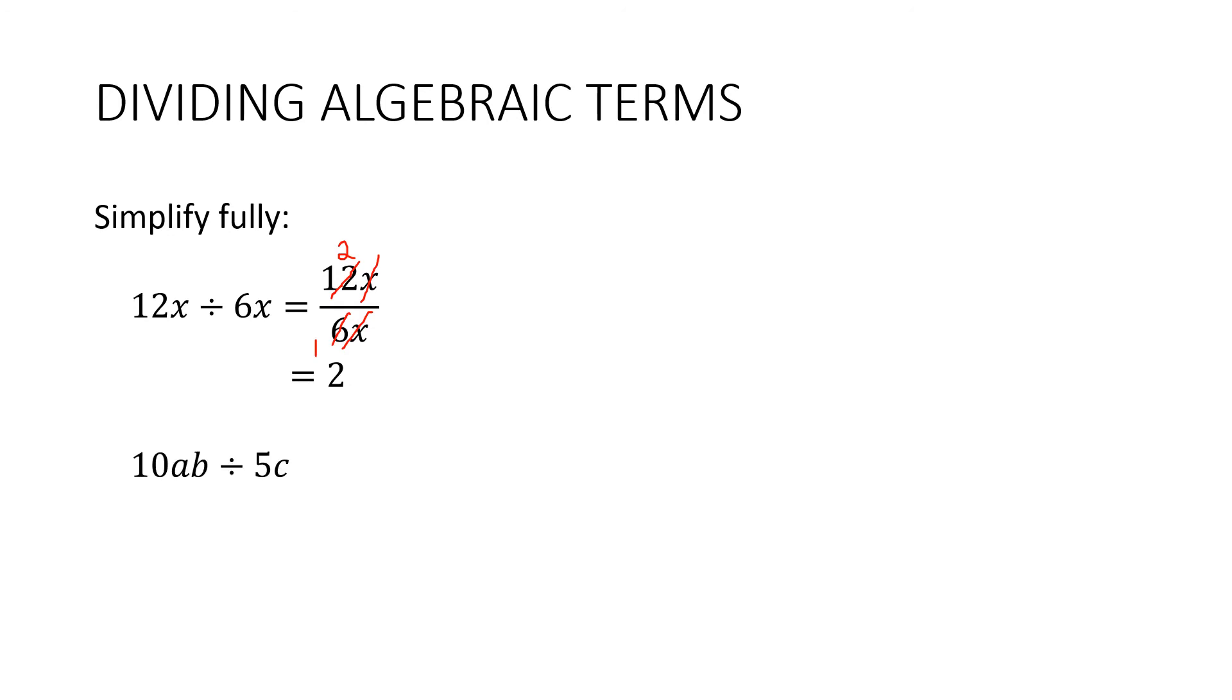How about this one? 10ab divided by 5c. Into fraction notation, I've got 10ab over 5c. And the only thing that cancels here is the 5. 5 goes into 5 once and goes into 10 twice. And so our answer is 2ab over c. Now this is one instance where it's much better to write it in fraction notation. Because whilst it might look easy to do it when it's in this form, you may not pick up that the c is actually on the denominator.